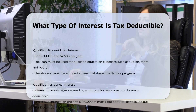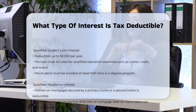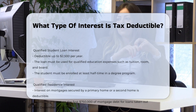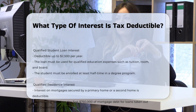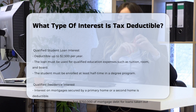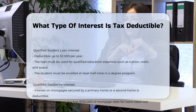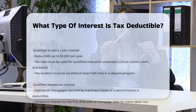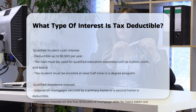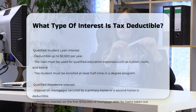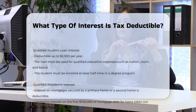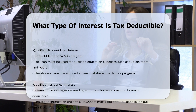Qualified student loan interest. Interest on qualified student loans is deductible up to $2,500 per year. To qualify, the loan must be used for qualified education expenses such as tuition, room, and board, and the student must be enrolled at least half-time in a degree program.